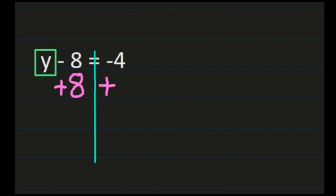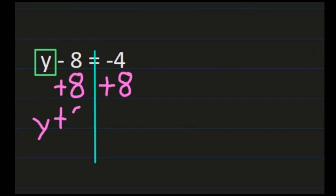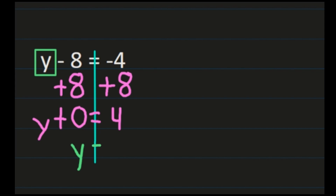On the left-hand side, y stays exactly the same. We have negative 8 plus 8, which is 0. On the right-hand side, we have negative 4 plus 8 — that's adding integers with different signs, so we subtract their absolute values: 8 minus 4 is 4, and we keep the sign of the number with the larger absolute value, which is the positive 8. So y plus 0 simplifies to y equals positive 4.